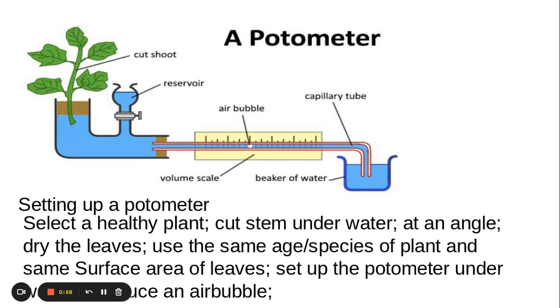I need to make sure I'm drying my leaves, and that links into the humidity part, to avoid a reduction in the transpiration due to water not wanting to leave as much if the leaves are wet. I've got to use the same age and species of plant, and I've got to make sure I've got the same surface area of the leaves or the same number of leaves. I also need to make sure I set up the potometer underneath the water and introduce an air bubble once it's all set up.